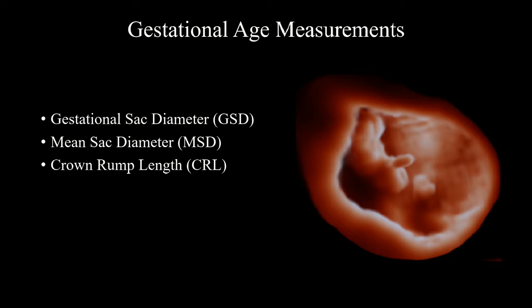Now let's talk about the gestational age. You have seen the gestational sac, yolk sac, and embryo — you can measure gestational age from all of these. I will talk about three common measurement parameters: gestational sac diameter or GSD, mean sac diameter or MSD, and CRL or crown-rump length. Gestational sac diameter and mean sac diameter give good results before the 8th week. Crown-rump length or CRL gives excellent results between the 7th and 12th week, and this gives the most accurate results among all parameters of gestational age.